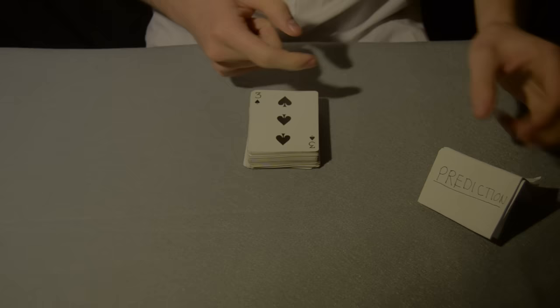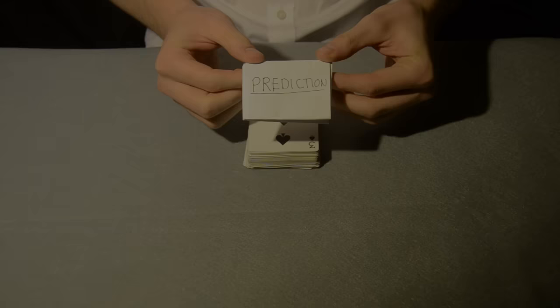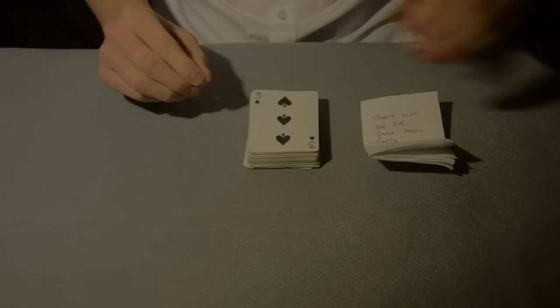The magician then stops and points to his prediction and opens it up. The prediction reads, there'll be 25 face down cards, so the magician counts out how many face down cards there are in the deck.